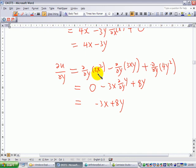So you differentiate 2x squared with respect to y, minus differentiate 3xy with respect to y, and plus differentiate 4y squared with respect to y.